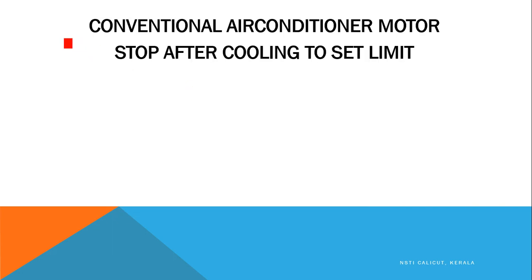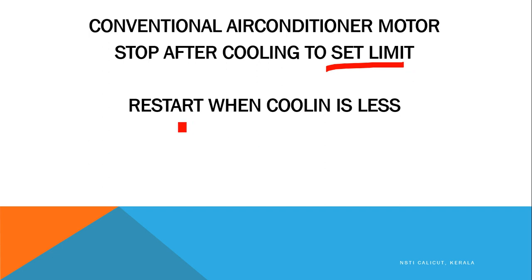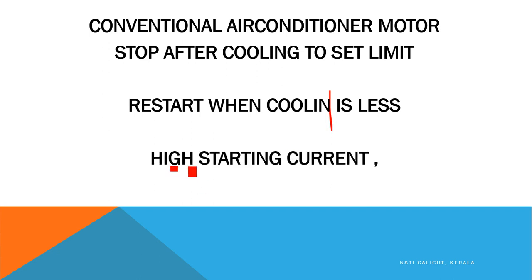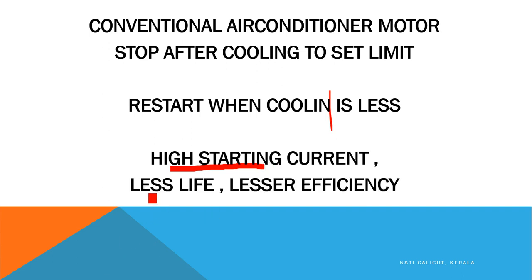In a conventional air conditioner, you may have heard the sound that the AC works for some time and then switches off. When you set a cooling limit of 22°C and the room is at 28-30°C, the air conditioner works continuously cooling the room. When it reaches the set temperature, it switches off, and when the temperature rises again, it restarts. This repeated stop-start operation means high starting current occurs repeatedly, resulting in lesser life and lesser efficiency for conventional air conditioners.